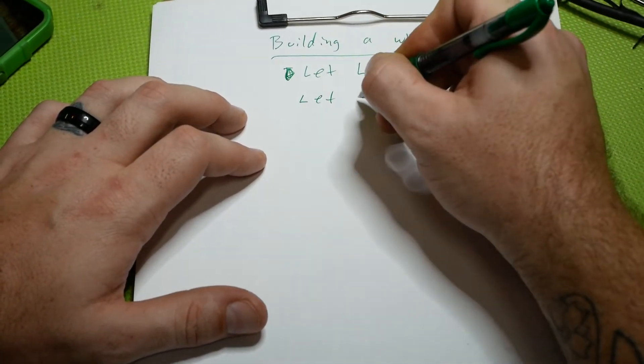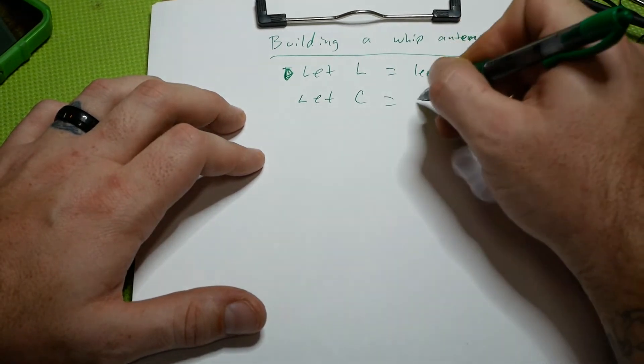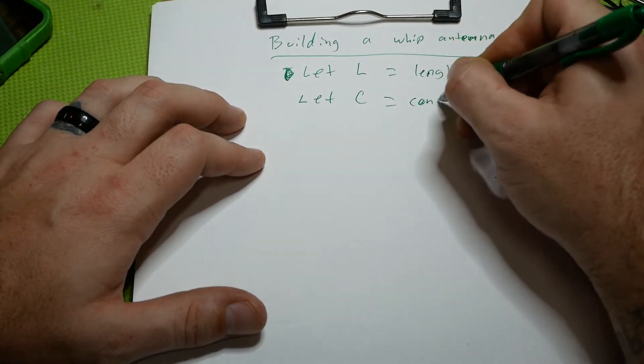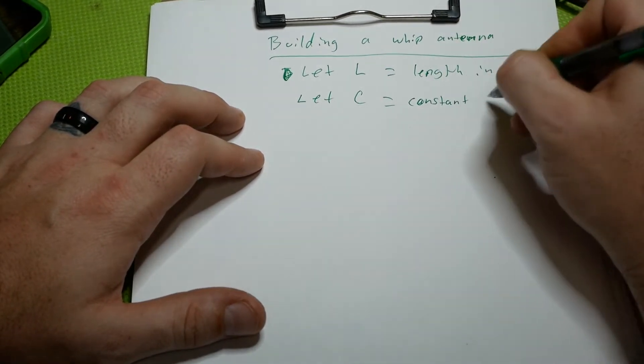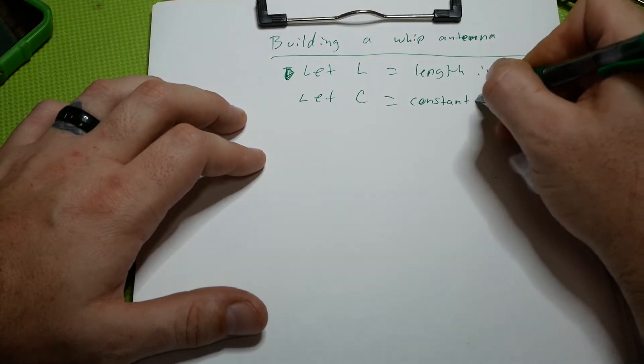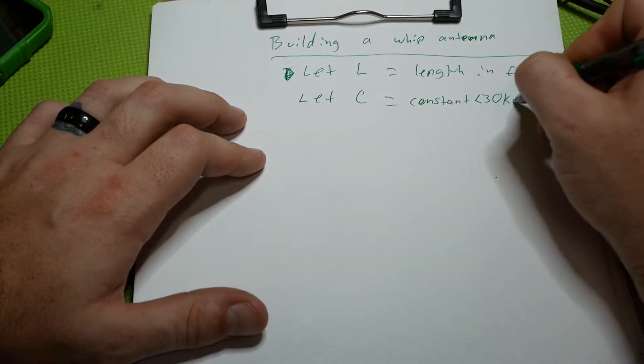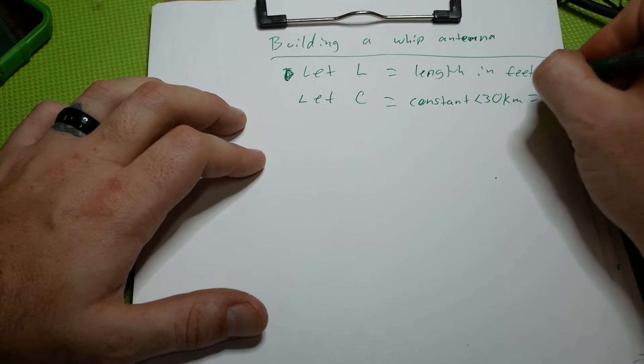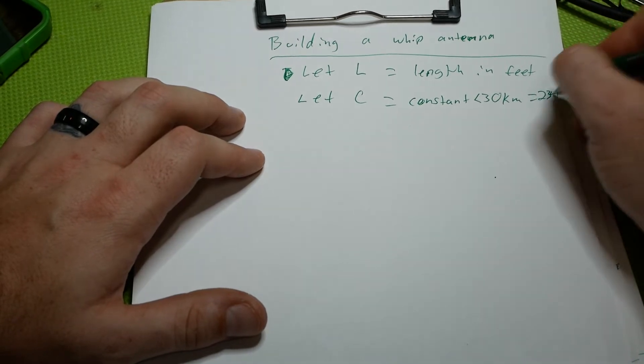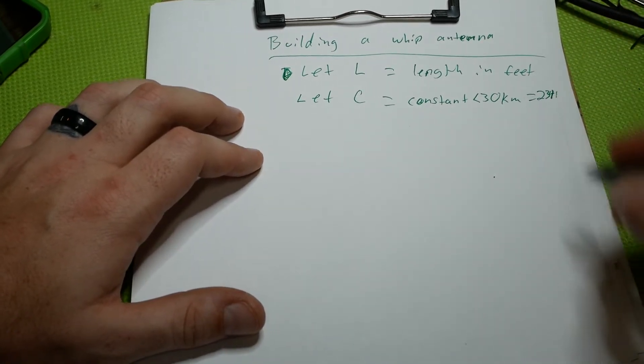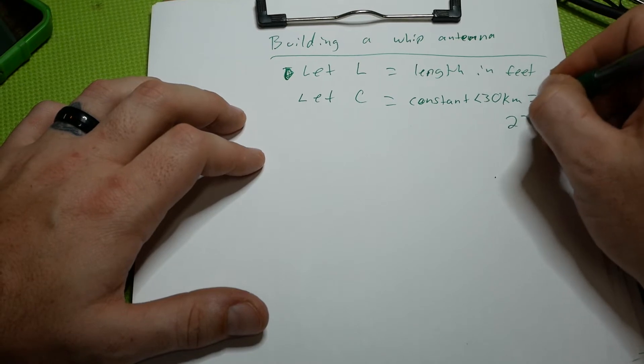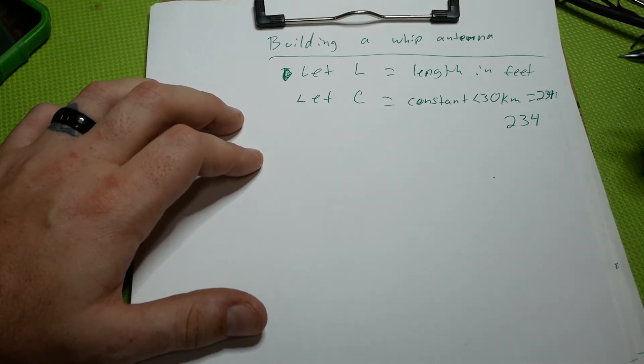Anyway, we're going to let our constant uppercase C, which is a constant below less than 30 kilometers, is equal to 234. It's very hard to read. 234. All right.